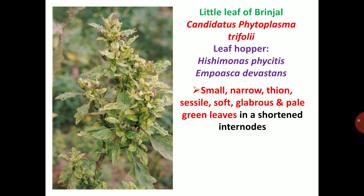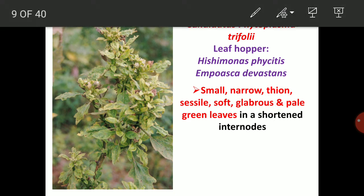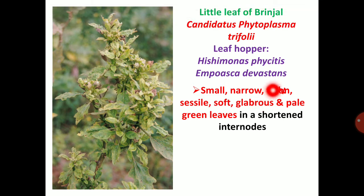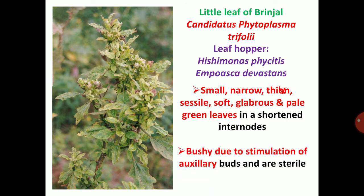Symptoms of little leaf of Brinjal include small, narrow, thin, soft, glabrous, and pale green leaves on short internodes. Small leaves are produced due to stimulation of axillary buds, and plants are sterile.